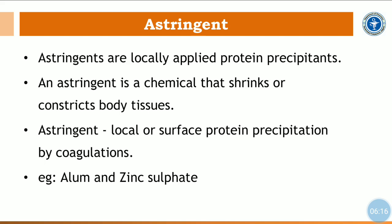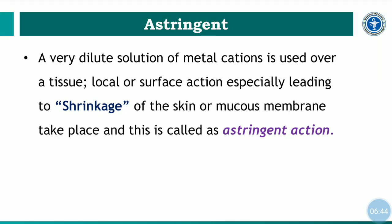Astringents are locally applied protein precipitants. An astringent is a chemical that shrinks or constricts body tissues, producing local or surface protein precipitation by a coagulation process. Well-known examples are alum and zinc sulfate. Generally, an astringent is a very dilute solution of metal cations — positively charged ions — which, when applied over a tissue, reacts with protein molecules to form a protein-metal complex, leading to shrinkage or constriction of skin or mucous membrane. This is called astringent action.